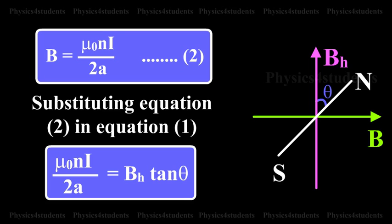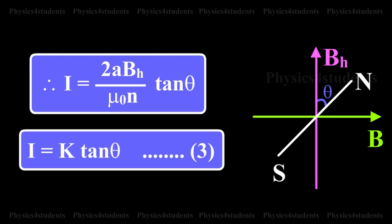Substituting equation 2 in equation 1, mu naught N I by 2A is equal to BH tan theta. Therefore, I equals 2A BH by mu naught N into tan theta. So, I equals K tan theta. This is equation 3.